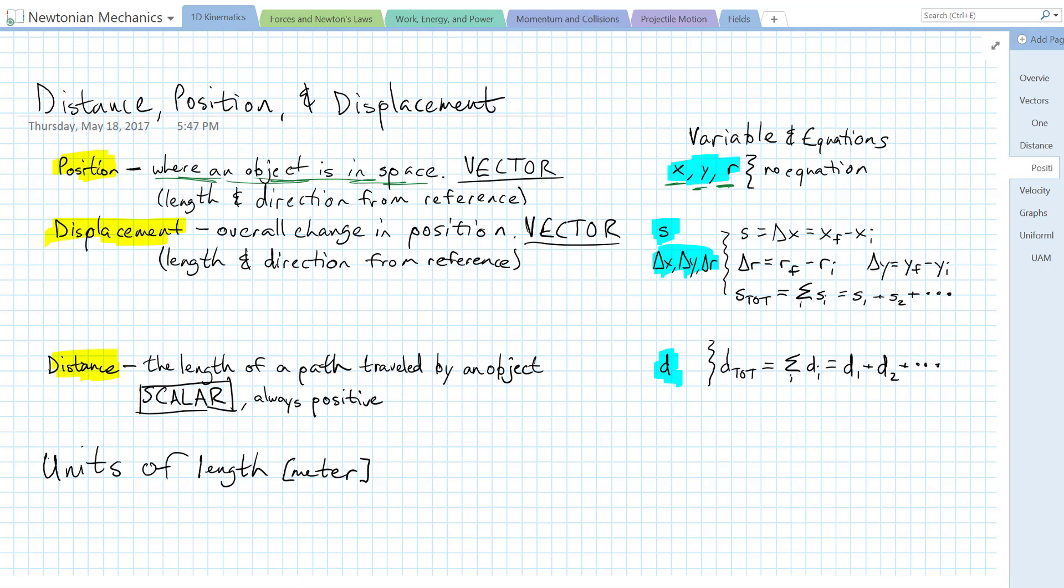Next up, we have displacement. When something is displaced, it moves. It changes from one position to another. So displacement is the overall change in position. All that matters is the change from your starting point to your ending point. The path doesn't matter.